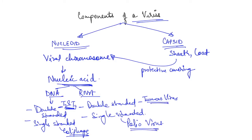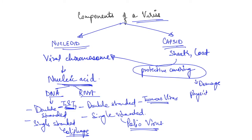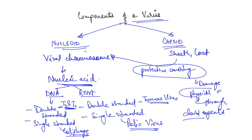Now let's look at the capsid in more detail. It is a protective covering that protects the nucleoid from damage — either physical damage or damage through chemical agents. The capsid is made up of subunits called capsomers, which together form the full protective coat around the nucleoid.